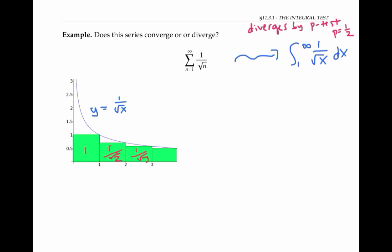As in the previous problem, if I ignore the first rectangle, then all the rest of the rectangles have an area that's less than the area under my curve from one to infinity. But there's a serious problem here. The integral from one to infinity of one over the square root of x dx diverges to infinity.